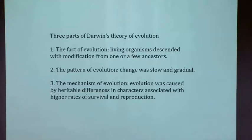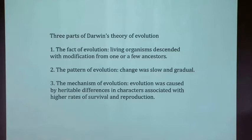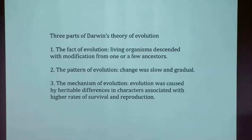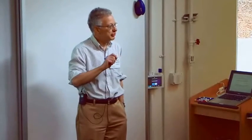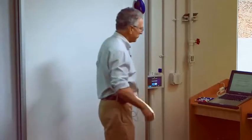You could believe the fact of evolution but not Darwin's pattern. For example, you could think that instead of gradual evolution, there was saltational evolution — where there was no change or very slow change, and then suddenly, at once, a species changed into something else. Logically, that's a distinct pattern, even though you accept the fact of evolution.